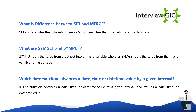What are SYMPUT and SYMGET? SYMPUT puts the value from a data set into a macro variable, whereas SYMGET gets the value from the macro variable to the data set. Which date function advances a date, time, or datetime value by a given interval and returns a date, time, or datetime value?